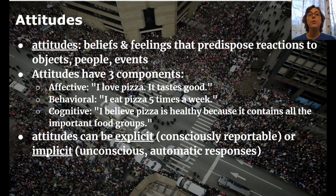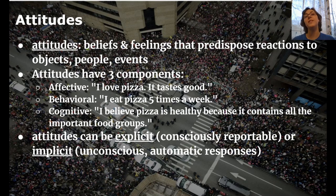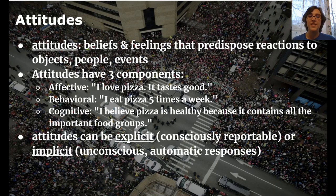The second component is behavioral — how do I act? Well, I eat pizza five times a week. That's my behavior. And the third component is cognition — how do I think? What are my beliefs or schemas about pizza? Let's say my schema is that I believe pizza is healthy because it contains all the food groups. So if that is my set of components about my attitude towards pizza, then when I'm at a party or there's a buffet, I'm much more likely to choose pizza over another food. It would predispose me to react positively towards pizza.